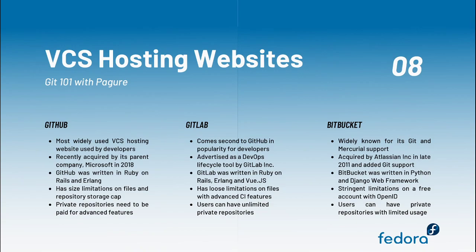Talking about VCS hosting websites, you can see three most popular VCS forges used by developers across the globe. Let's start with GitHub — it is the most widely used git forge by developers, which was recently acquired by Microsoft in late 2018. Written completely in Ruby on Rails and Erlang, it has size limitations on files and repository storage. Developers often frown on how limited they are when it comes to private repositories, and many features can only be availed on payment.